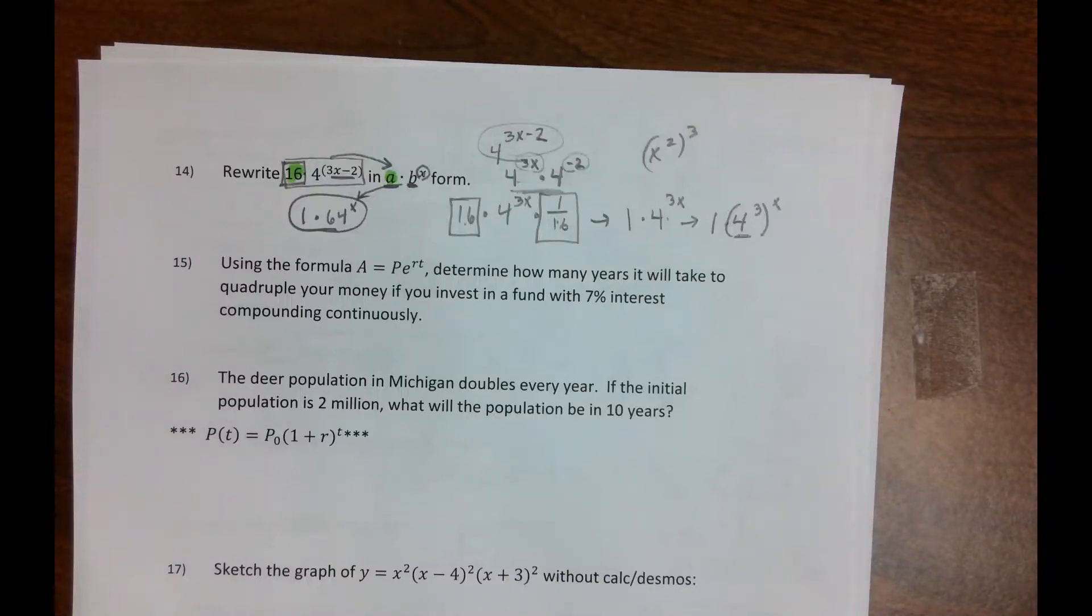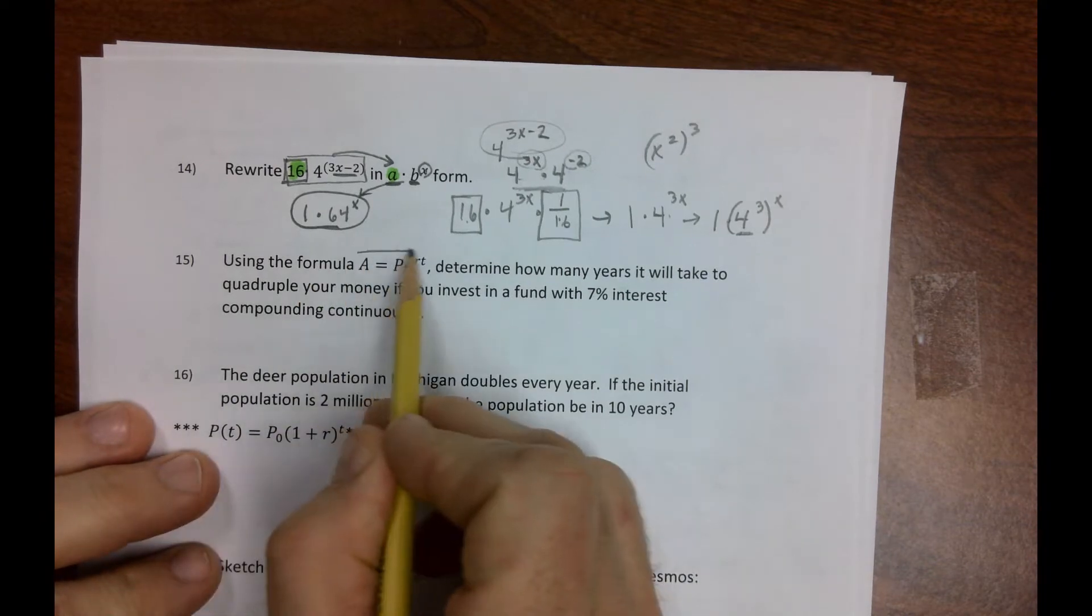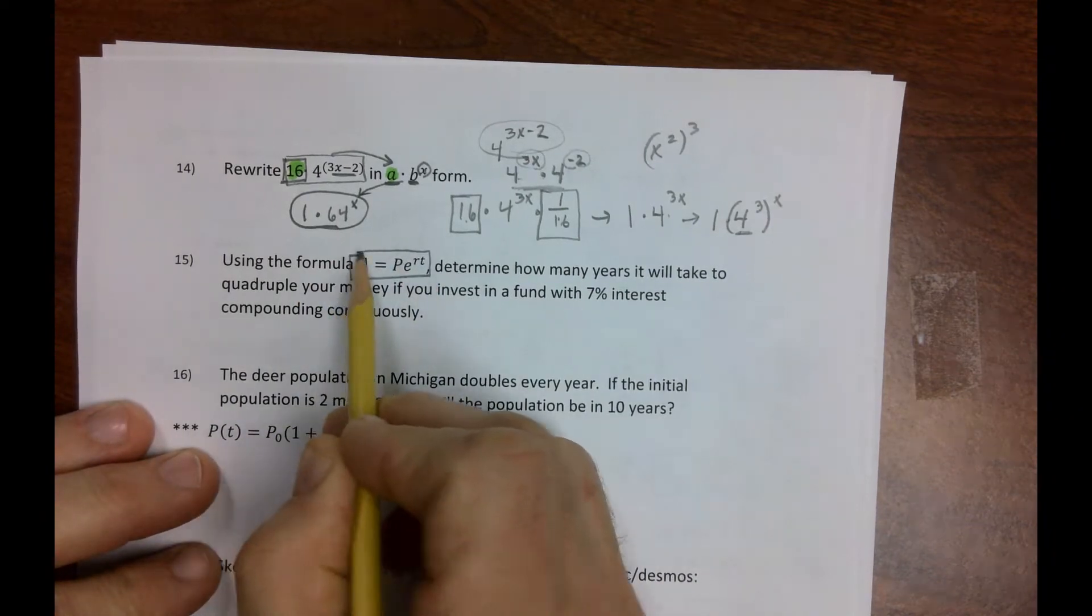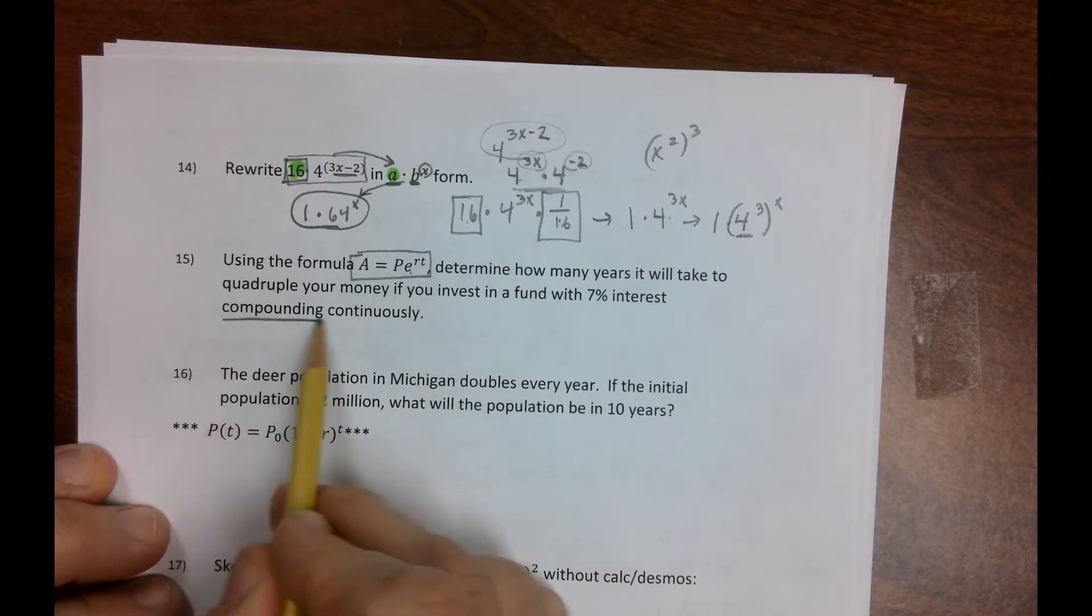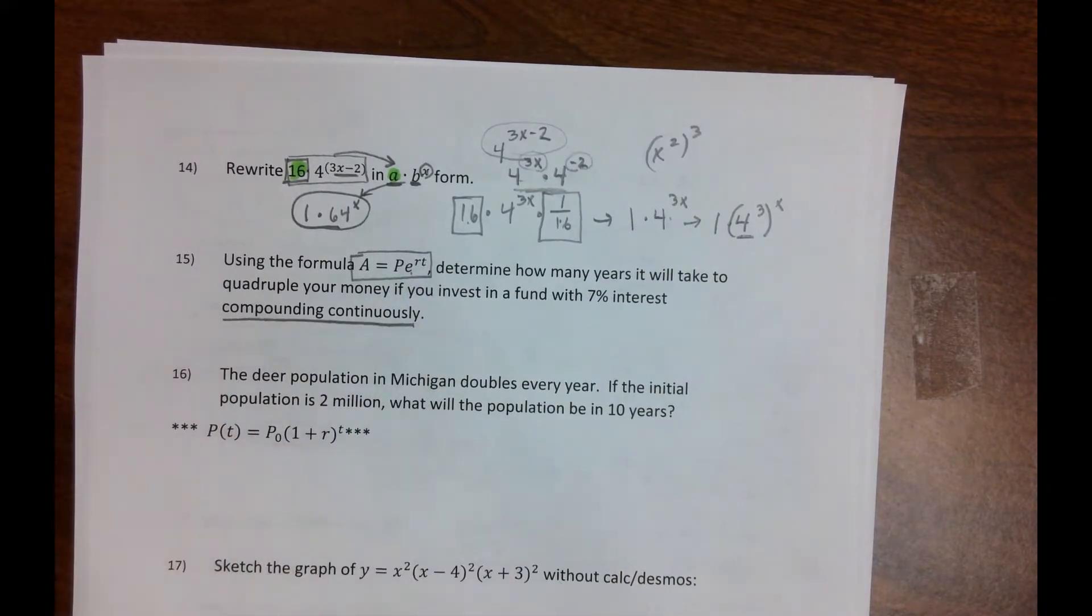Okay, part three. We're going to try to get her done on part three. So using this formula, nice when they give you the formula, this formula applies to any investing problem where there's continuous interest being compounded.